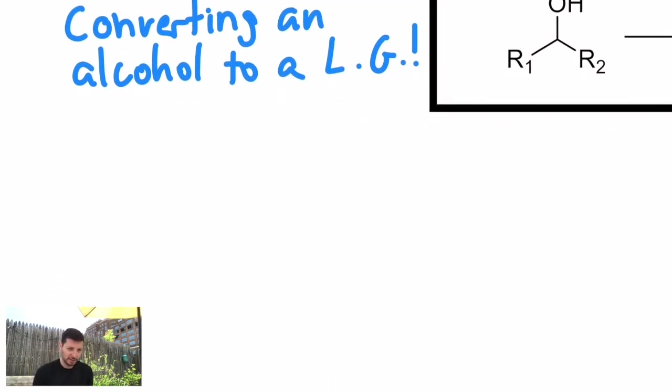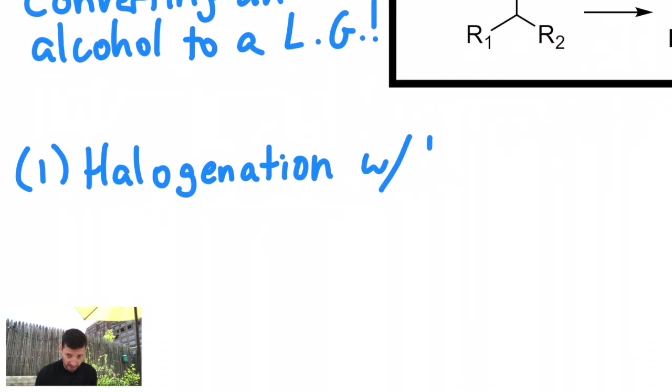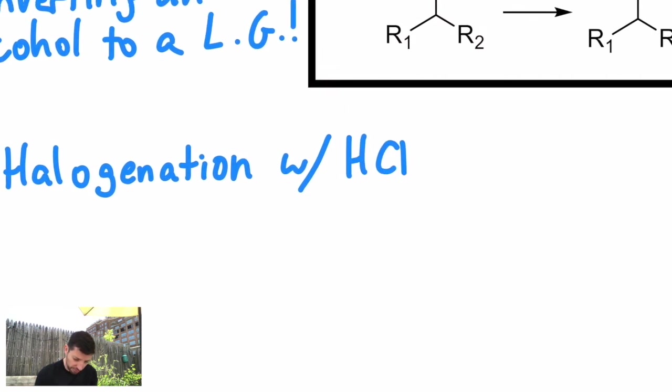You can halogenate with bromine, you can halogenate with chlorine, or you can make what's called a tosylate, which you remember our SN2 reactions. It's one of the best leaving groups out there. So I'll go through all three of those. Number one, halogenation with the haloacids, HCl or HBr.